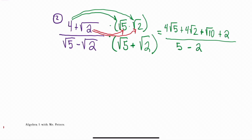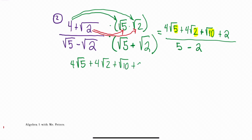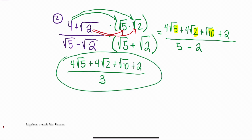When we look at the numerator, none of the numbers under the radical are the same, nor can we break them down — no like terms, nothing. So the numerator is going to stay the same, and we rewrite it. The denominator simplifies to 3, so the answer is all over 3.